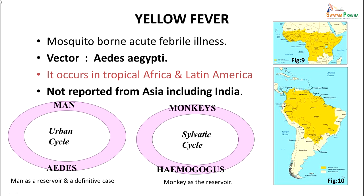This was the list of febrile illnesses produced by arboviruses — they could be either plain febrile or with hemorrhagic fevers. Yellow fever is one systemic illness produced by this virus; the vector is Aedes aegypti. It is a mosquito-borne acute febrile illness occurring in tropical Africa and Latin America, and is not reported from Asia including India. The disease typically has two cycles: an urban cycle involving man transmitted through Aedes, and a sylvatic cycle in monkeys transmitted through Haemagogus species.